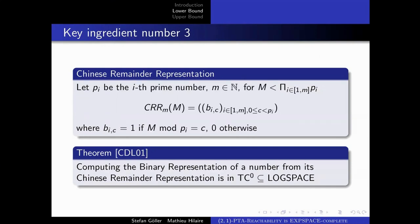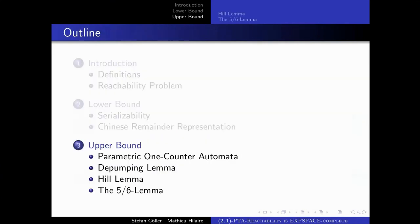These are essentially the ingredients of the lower bound proof, among which are two important notions: serializability and Chinese remainder representation. Now I will talk about the upper bound, which concerns a new model — that of parametric one-counter automata.